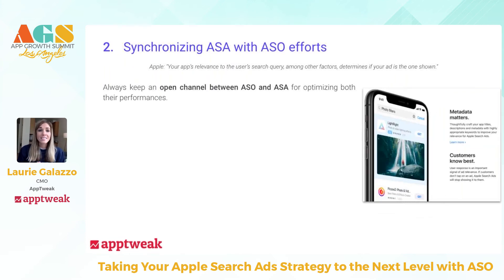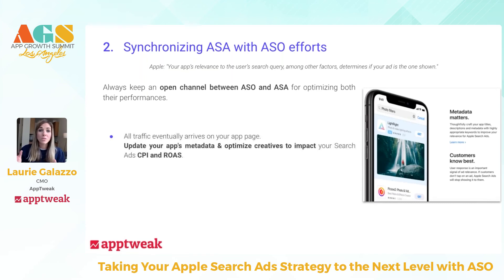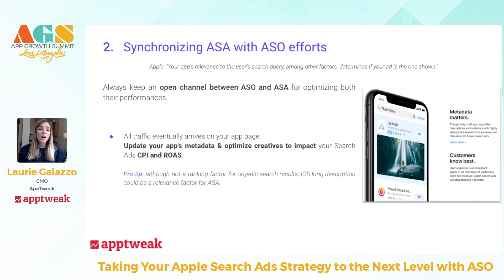The second and probably most important point is that you really want an open channel between your ASO and ASA teams — you want them to work together, communicate, and coordinate their efforts. This is crucial to optimize performance on both the organic and paid sides. All traffic eventually arrives on your app page, so it's super important to make sure your product page is optimized. If you're spending a lot of money on Search Ads, you want to make sure you convert. Optimize your metadata and creatives knowing that many users will land on your page — this helps your CPI and your conversion. Also, iOS long description is a relevance factor for Apple Search Ads, which is one more reason to keep your metadata optimized.